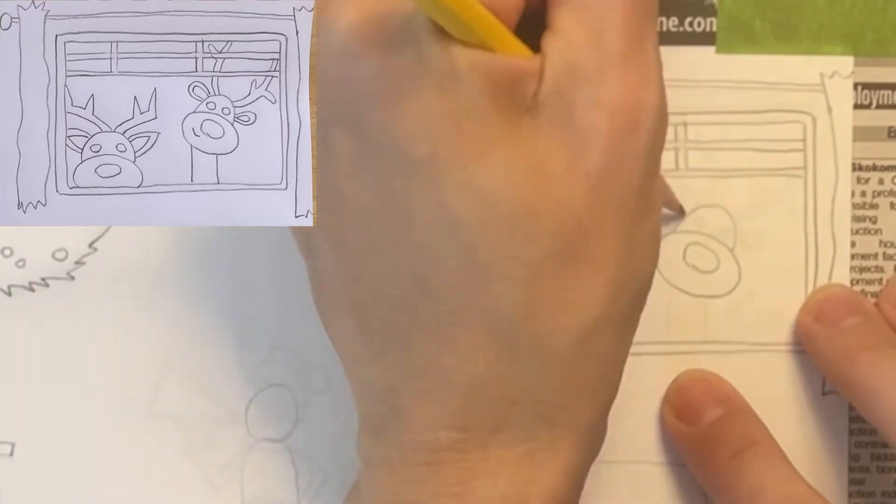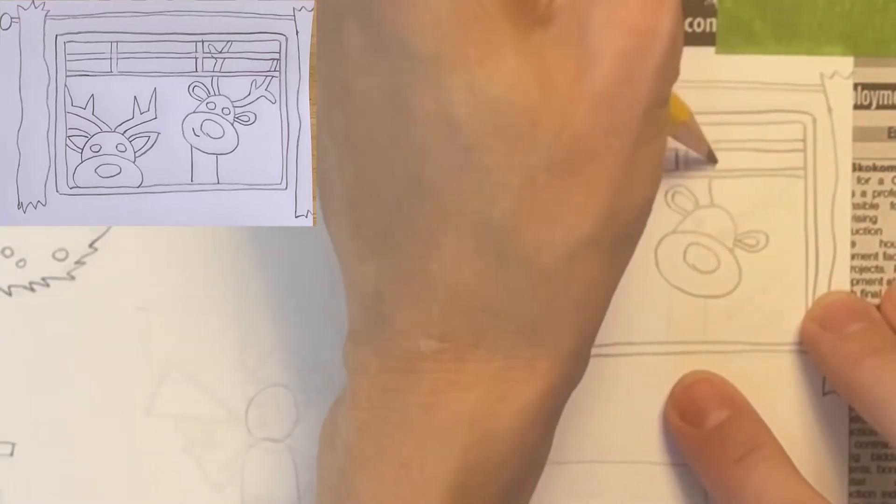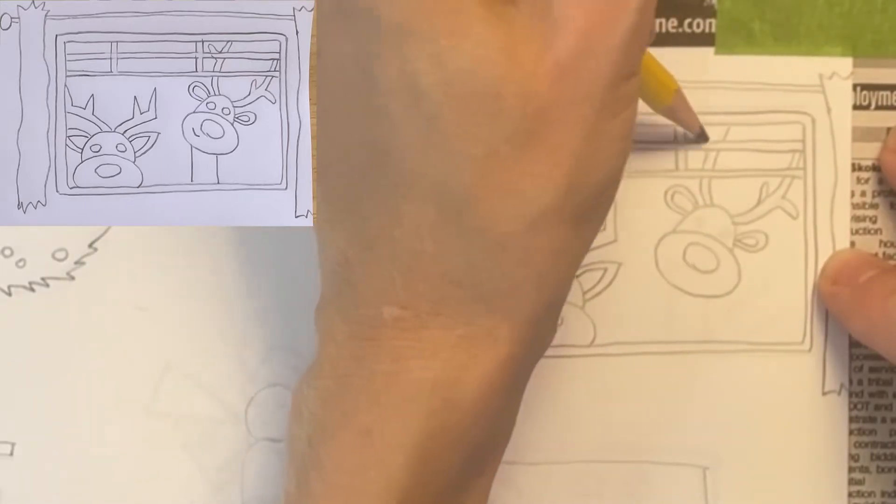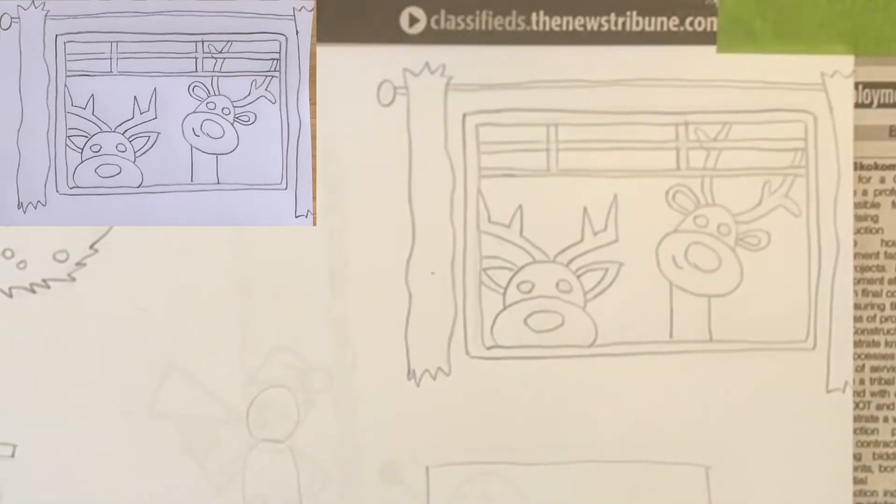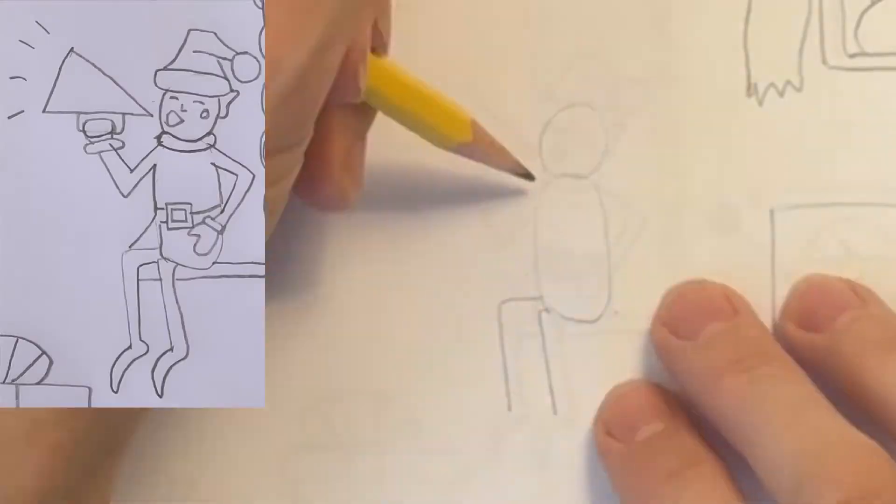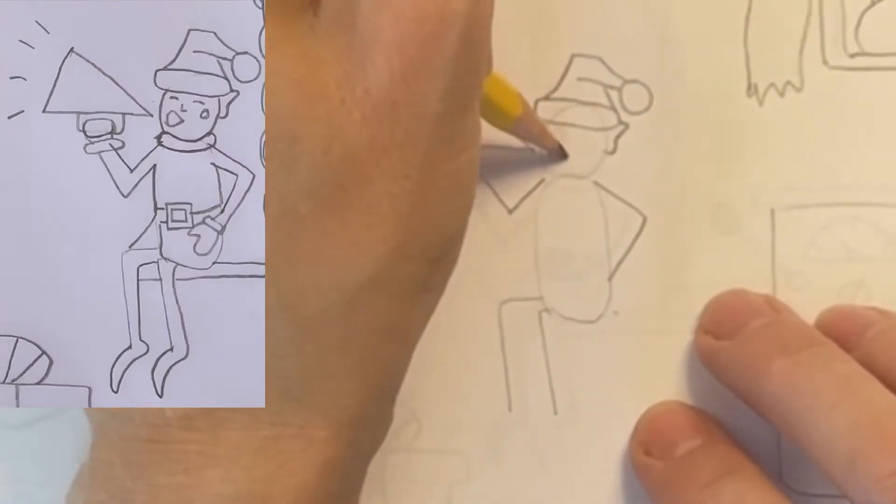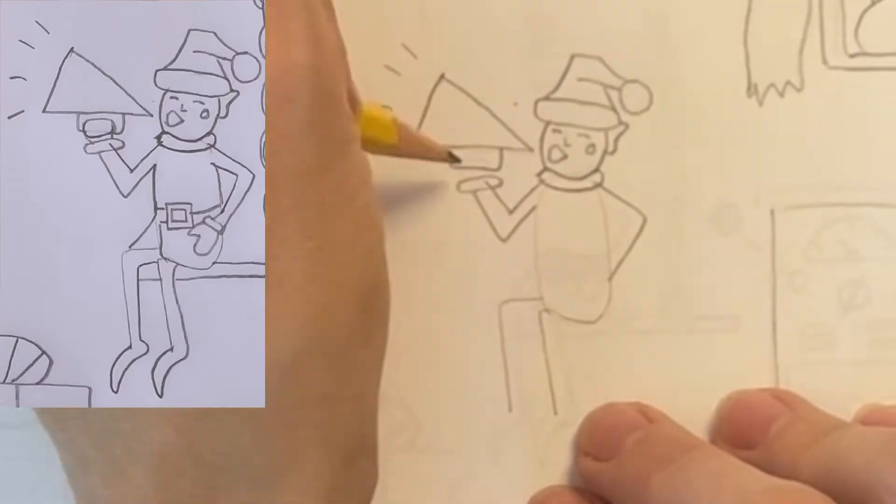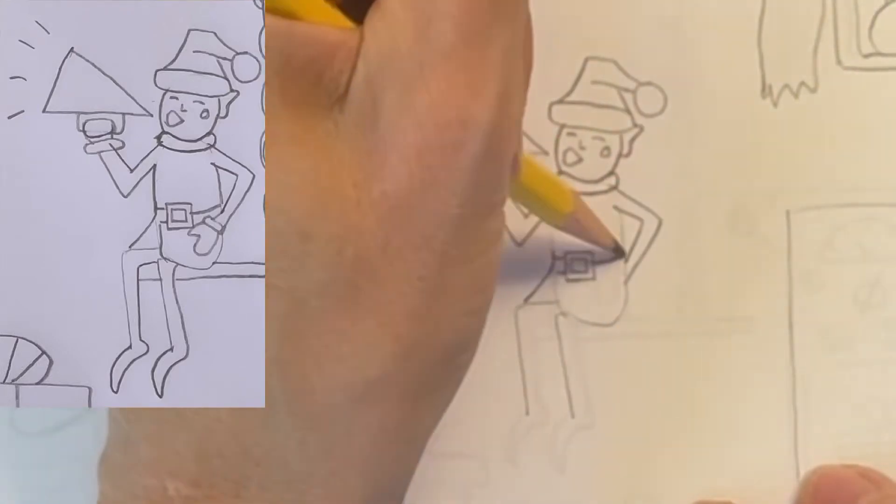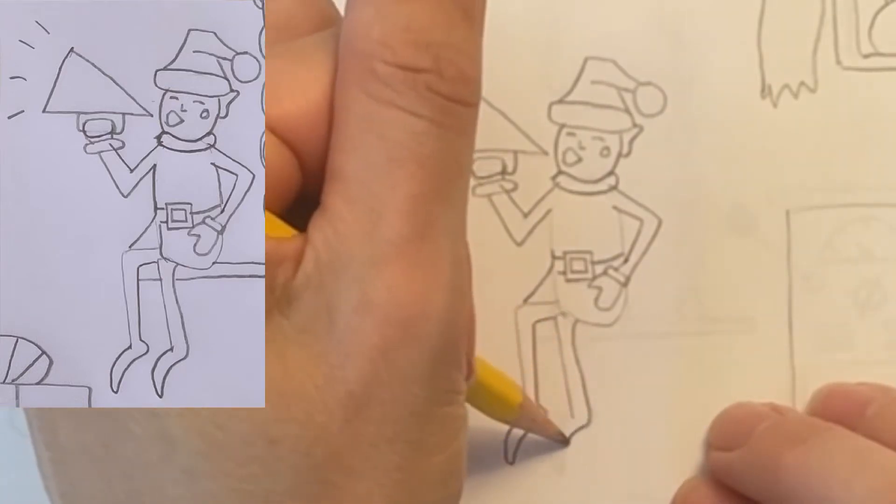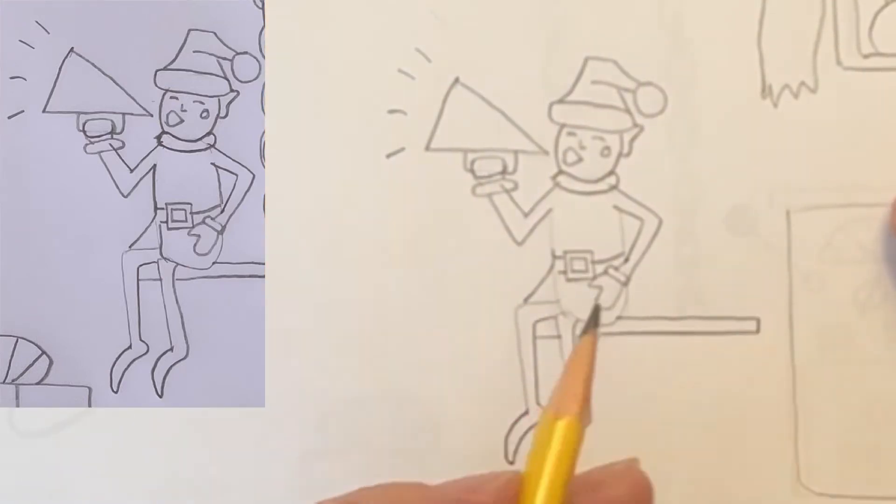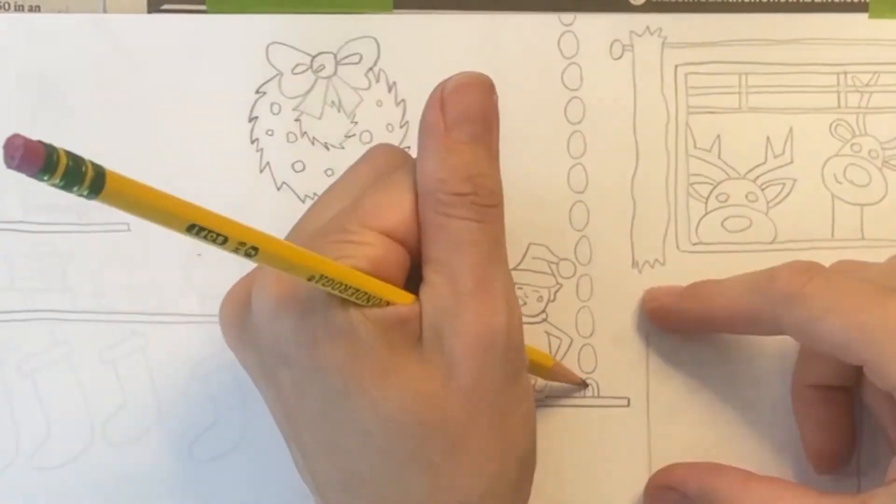I'm using simple shapes to draw these reindeers so that they will be easy for you to copy. Feel free to pause or rewind the video here if that's helpful. I'm going to fill in the details for my elf on the swing. Notice that he's talking through a loudspeaker. He's got skinny legs and long pointy feet. This swing is hanging on a metal chain.